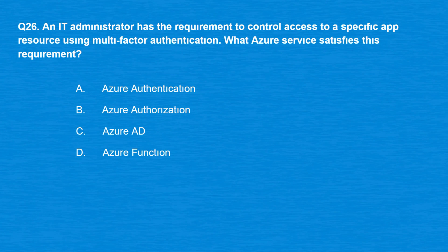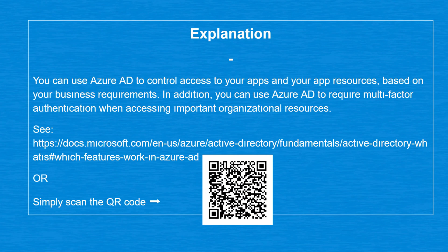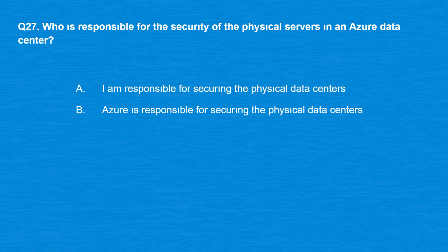Question 26: An IT administrator has the requirement to control access to a specific app resource using multi-factor authentication. What Azure service satisfies this requirement? Option A: Azure Authentication. Option B: Azure Authorization. Option C: Azure AD. Option D: Azure Function. The correct answer is Option C, Azure AD. You can use Azure AD to control access to your apps and app resources based on your business requirements, and to require multi-factor authentication when accessing important organizational resources.